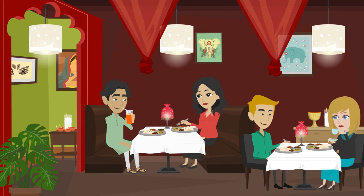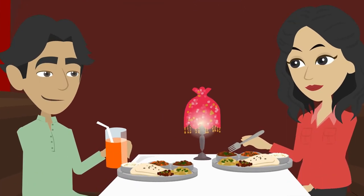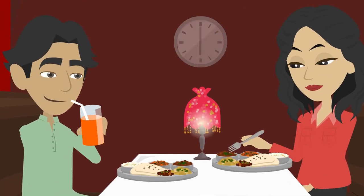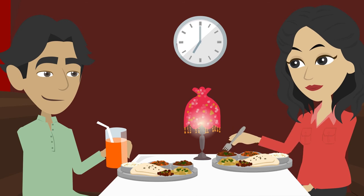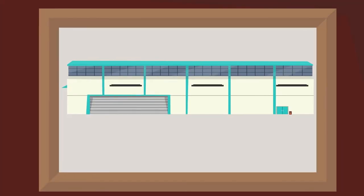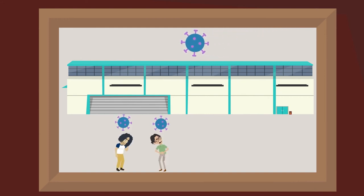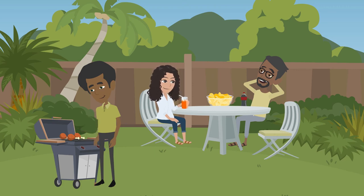Outside of the household setting, those who had close physical contact, shared meals or were indoors for approximately one hour or more with sick people — such as in places of worship, gyms or the workplace — were also at increased risk of infection. If you have to meet people, consider meeting outdoors as it greatly reduces the risk of infection.